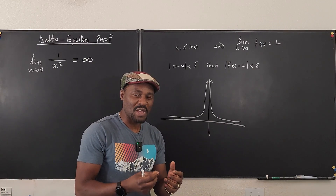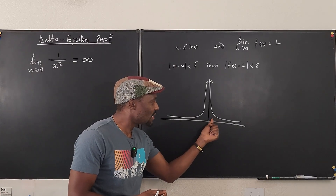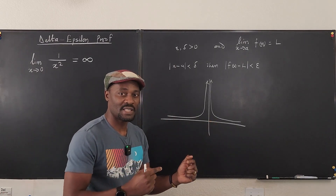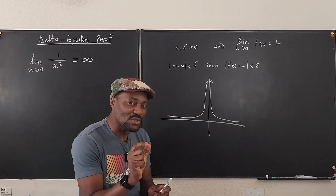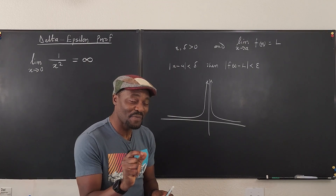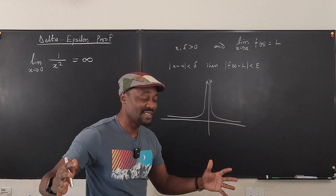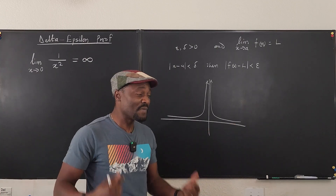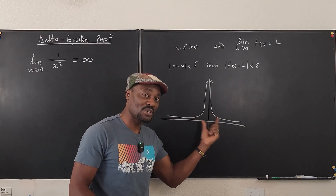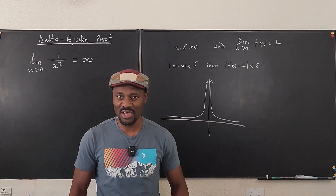We just want to be able to show that if you stay close enough to zero, your limit will be infinity. We're trying to be as close as possible, so our delta is going to be very small. Whatever number you can imagine, as big as anything, we just need to prove that if delta is small enough, the limit of this function will be bigger than any number you can imagine.